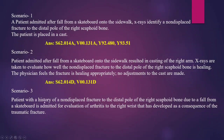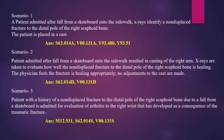Case study 2: A patient with a history of non-displaced fracture of the distal pole of the right scaphoid bone due to a fall from a skateboard is admitted for evaluation of arthritis of the right wrist that developed as a consequence of the traumatic fracture. The physician has documented this as a sequela — the arthritis is a consequence of the fracture injury, so the 'S' character applies.